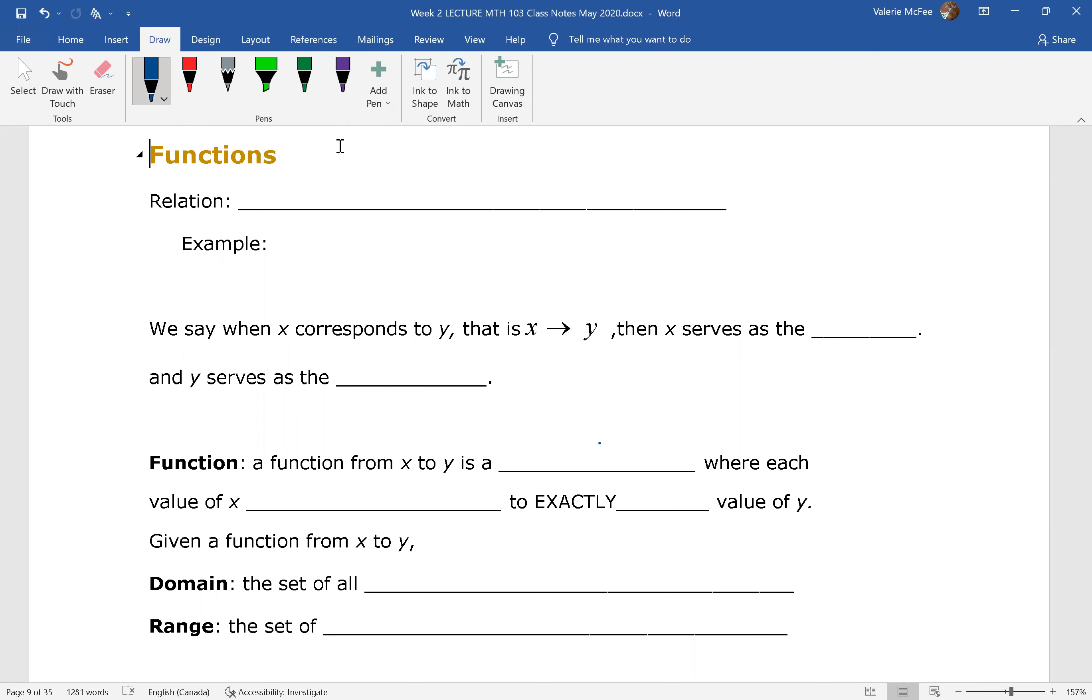In this lecture we want to talk about functions. A function is a relation, a relation is a set of ordered pairs. Remember that a set of ordered pairs is a set of XY coordinates. So for example, we could write this as just a set of distinct XY coordinates. So this is a relation.